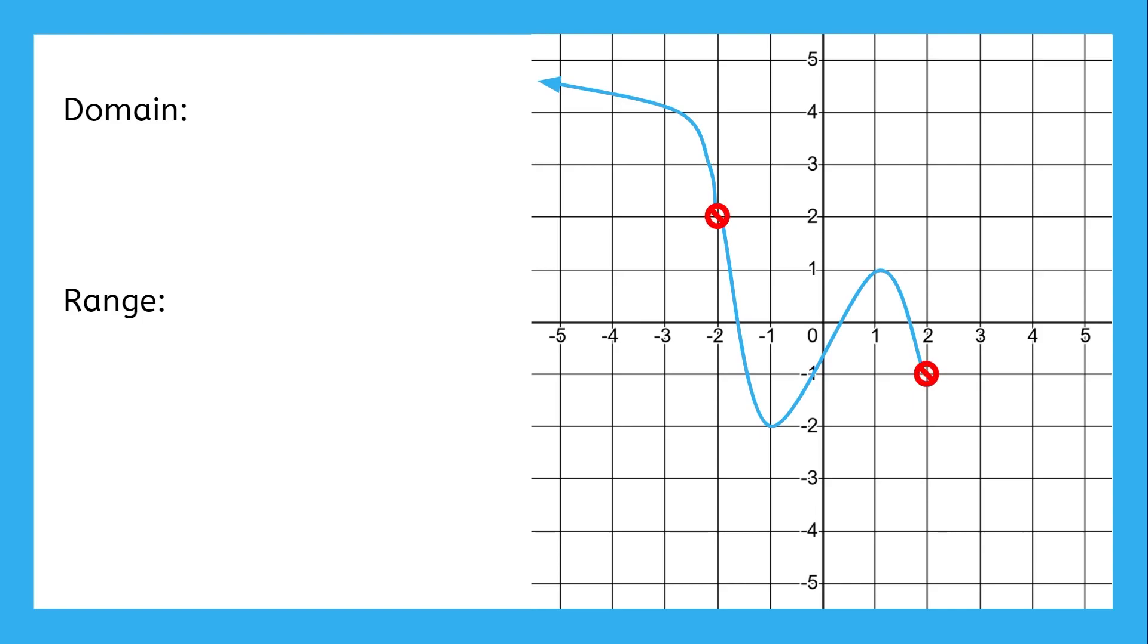These holes are basically non-points, places on the function where the point that's supposed to be there is missing. The problem is, if there's no point, then it can't be included in the domain or range. So how do we write intervals if points are missing?